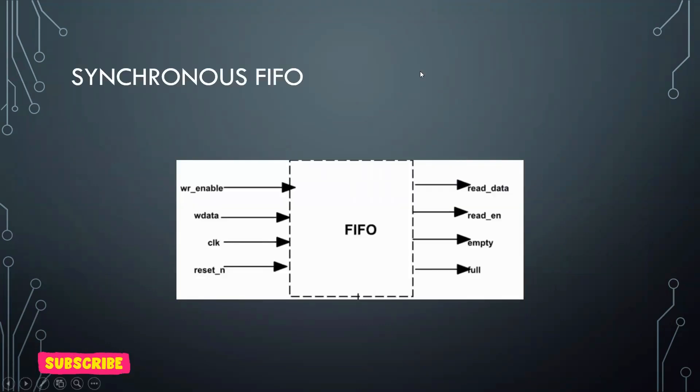You can see the simple structure of a synchronous FIFO. You can see here we have a write enable. How can I say this is synchronous FIFO? Because I am using a single clock here. So we can easily see it is synchronous FIFO. We have write enable signal, read enable signal, write data, read data, and reset signal.